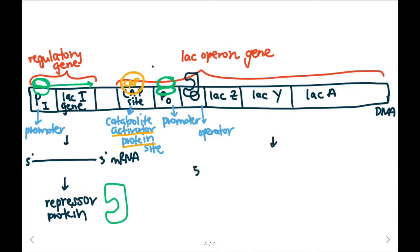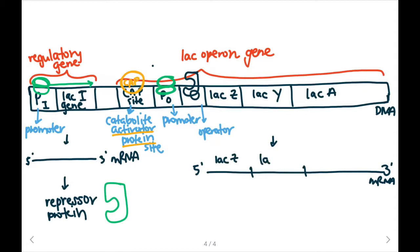So if the repressor protein isn't present, our RNA polymerase can transcribe a 5' to 3' mRNA. And this mRNA consists of the three genes, lac Z, lac Y, and lac A.